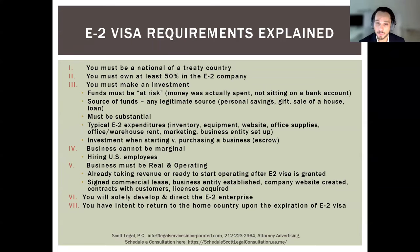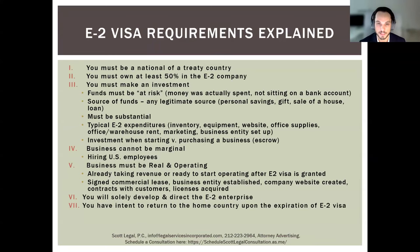Source of funds is also something you need to document. The funds must come from a legitimate source — savings, a gift, or could be a loan as well, such as sale of a house. Loans require more careful review because there are requirements about whether it's a secured or unsecured loan. The level of scrutiny about the source of funds will depend on whether you're applying for the visa at a consulate or applying for E2 status with USCIS. Our team can help with determining the level of scrutiny depending on the case.